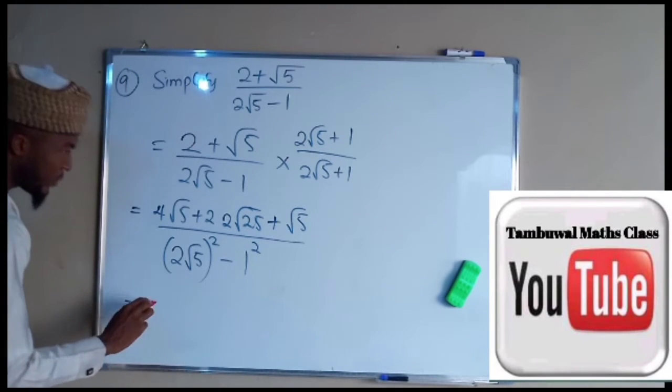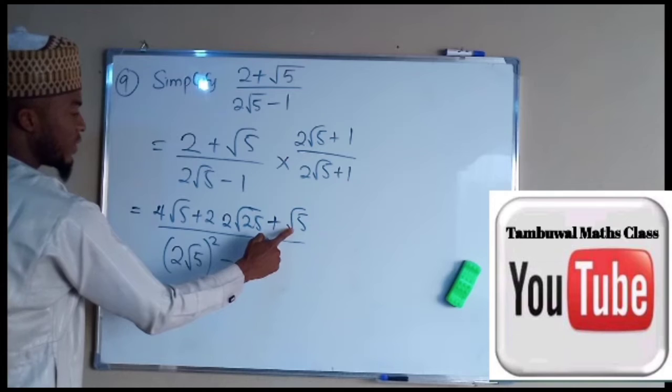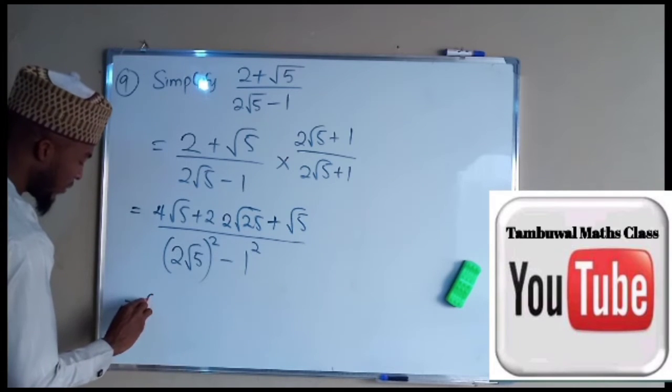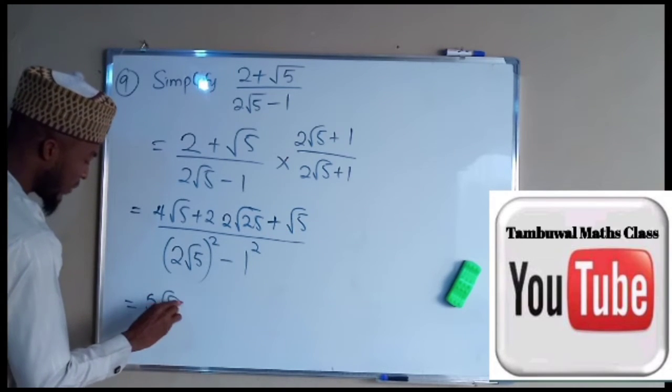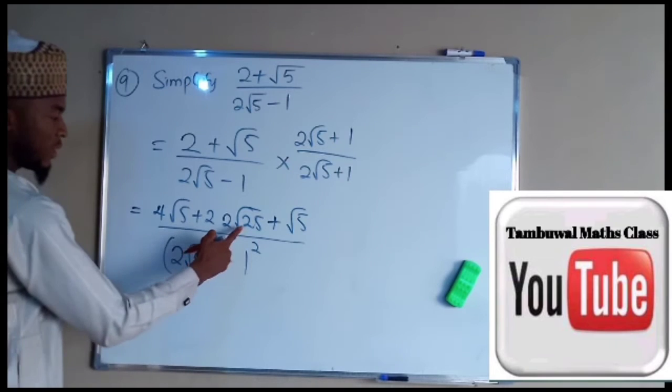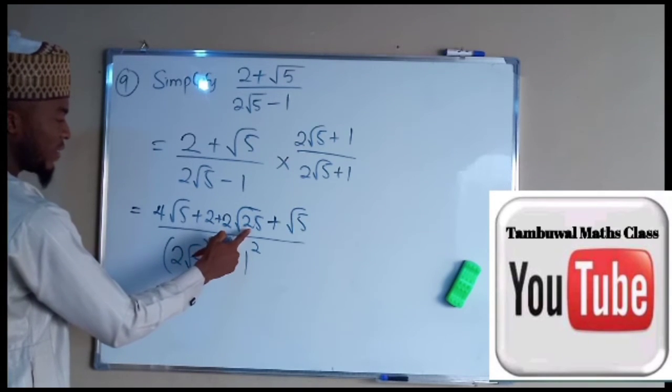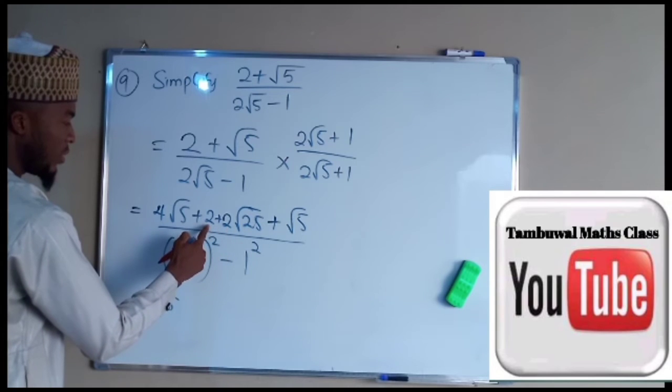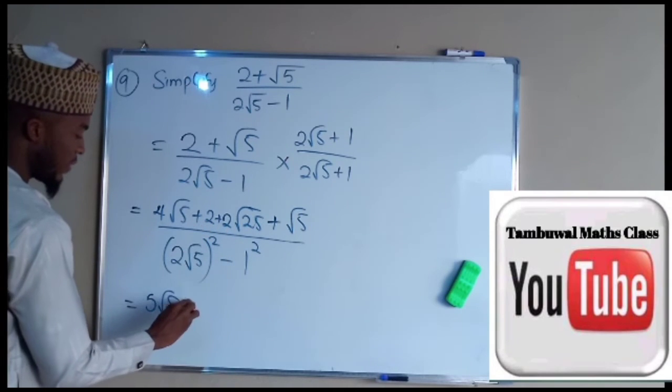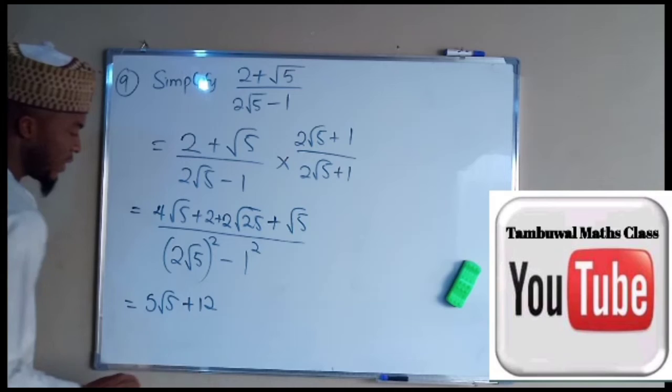So let's simplify: 4 root 5 plus a single root 5 making 5 root 5. Then we have plus here. Then 2 root 25 is 5 times 2, 10 plus 2, 12. We have 12 here.